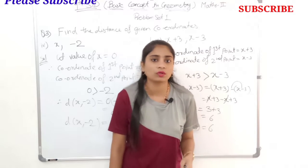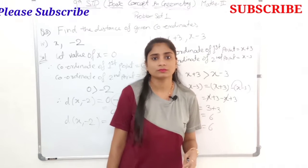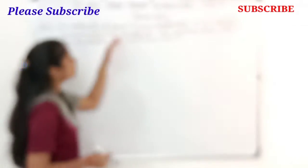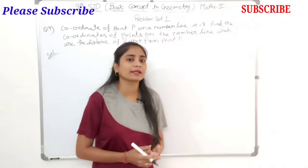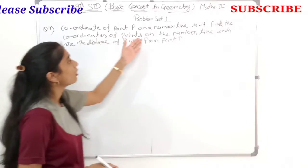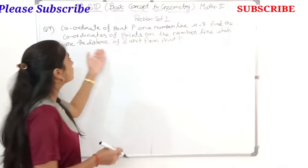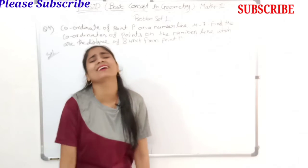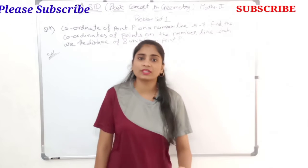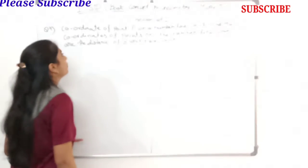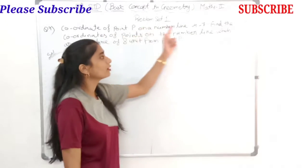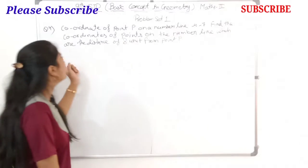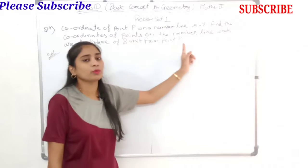Question number 3 should now be easy for you and you can solve it easily. Let's look at question number 4. The coordinate of point P on a number line is minus 7. We have to find the coordinates of a point on a number line which is at a distance of 8 units from point P.